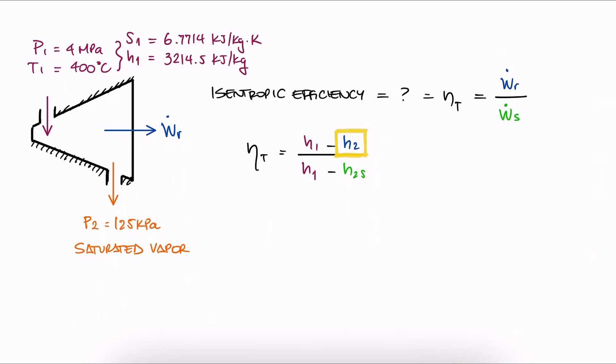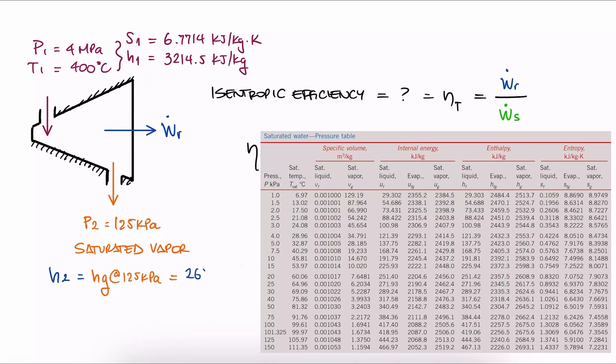In the real case, the steam is coming out as saturated vapor. This means that h2 can be found from a saturated water table by pressure as hg. We look that up and write down h2.